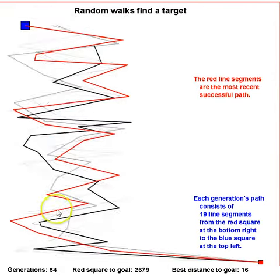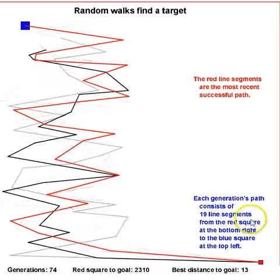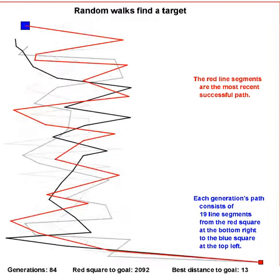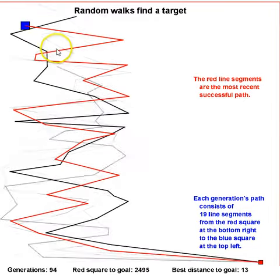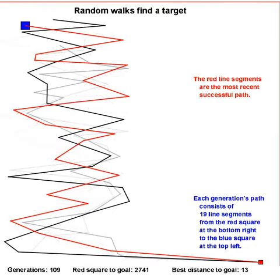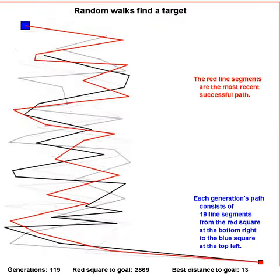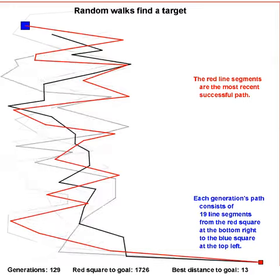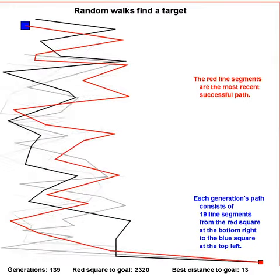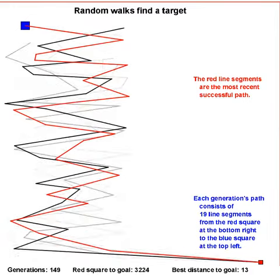So each generation's path consists of those 19 line segments, from that red one to the blue one. And once a path is successful in making it all the way to the blue square,